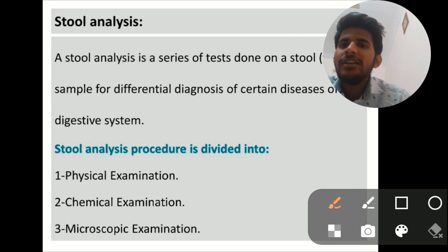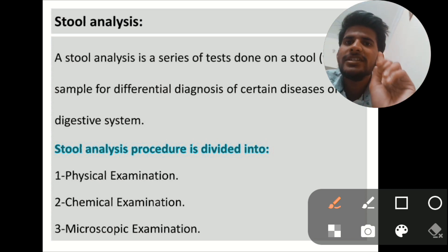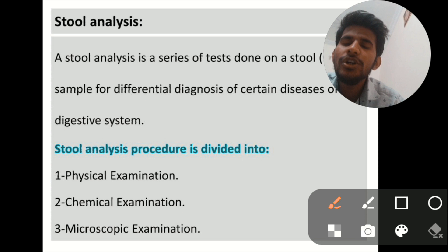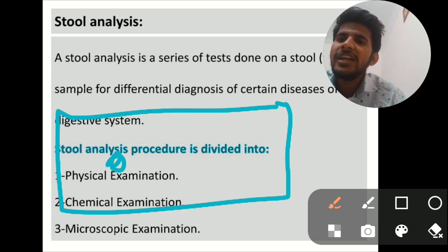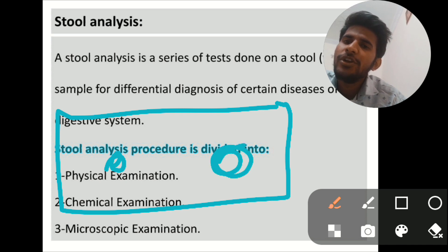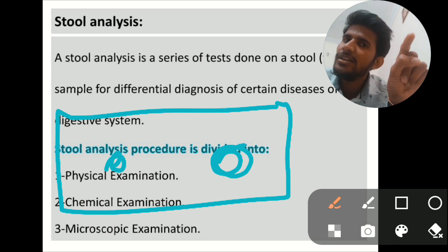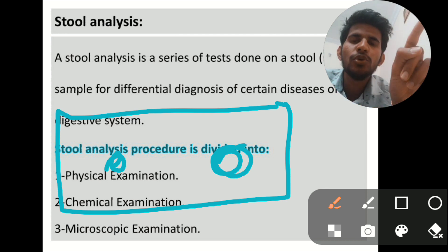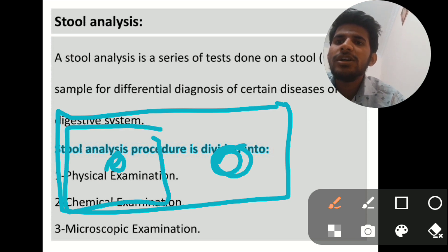In that, they will tell you by two methods. One is by wet mount preparation by saline, and another one is Lugol's iodine preparation. So you have to take a simple slide and put one drop of saline and another drop of Lugol's iodine on it. Then take a sterile stick, take the feces sample, and mix them in saline and Lugol's iodine. Then take a cover slip and cover this without having any air bubble in it.